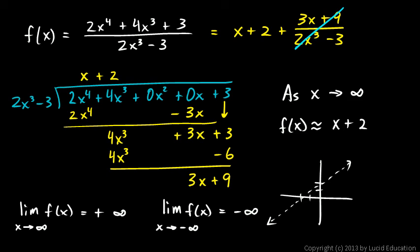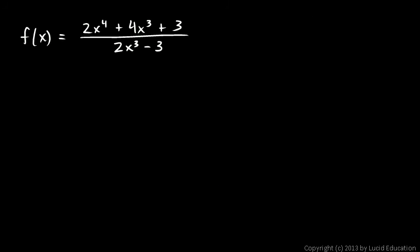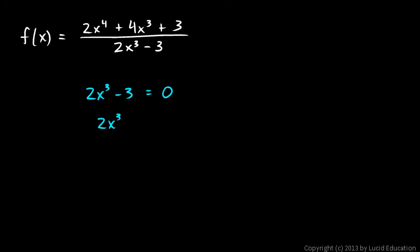We didn't actually graph the function — if all we're trying to do is find the end behavior and express it with limit notation, that's it. Note also that this function has a vertical asymptote. Look at the denominator: 2x cubed minus 3. A vertical asymptote will occur where the denominator is zero, so 2x cubed minus 3 equals zero. Solving: 2x cubed equals 3, so x cubed equals 3 halves, so x equals the cubed root of 3 halves. That's where our vertical asymptote will be.